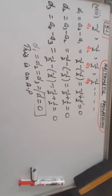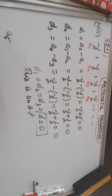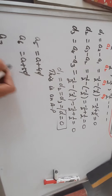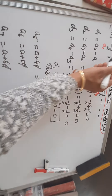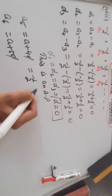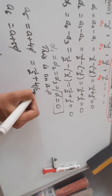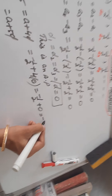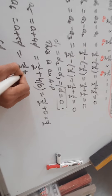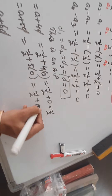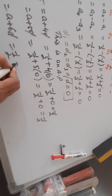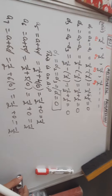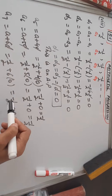Since the common difference is 0, this is an AP. Let us find the remaining terms: A5, A6, A7. A5 is A plus 4D, A6 is A plus 5D, A7 is A plus 6D. A is -1/2 and D is 0. So A5 is -1/2 plus 4 into 0, which is -1/2 plus 0, which is -1/2. Similarly every value will be the same because the common difference is 0.